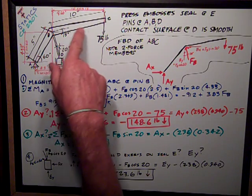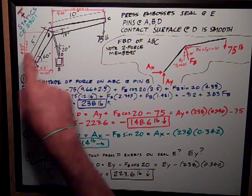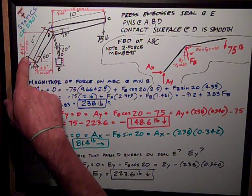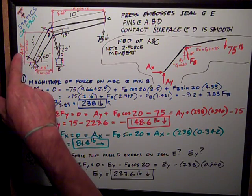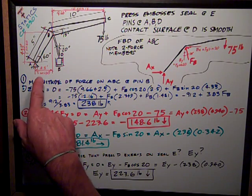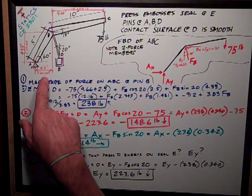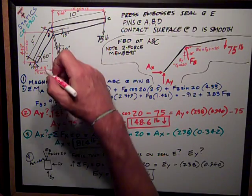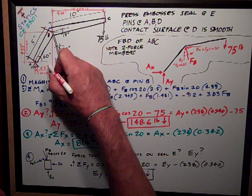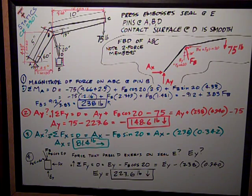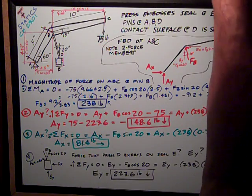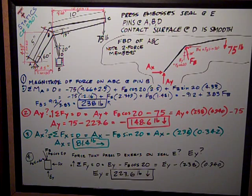So I've worked out the geometry here. The vertical distance from B to A is five times the sine of 60, 4.33 inches. Horizontal distance is 2.5 inches. That should be inches. And then that's five times the cosine of 60. And this up here is 9.66 inches, which is 10 times the cosine of 15. So that's the geometry.